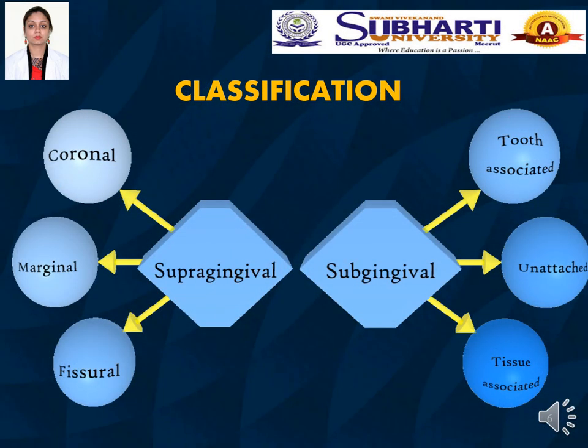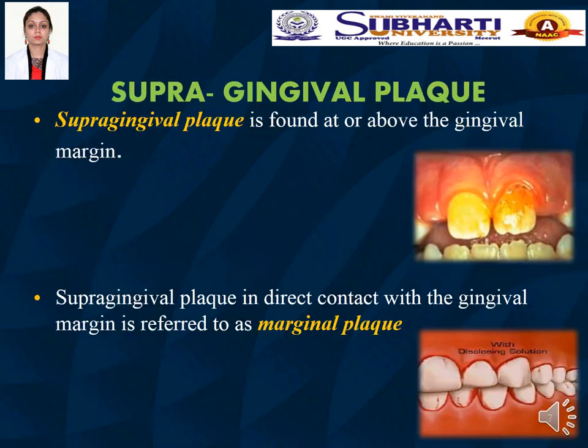Dental plaque can be broadly classified as supragingival plaque and subgingival plaque depending upon its location on the surface of the tooth. Supragingival plaque can further be subclassified as coronal plaque, marginal plaque and fissural plaque. On the other hand, subgingival plaque can be classified as tooth-associated, unattached and tissue-associated plaque.